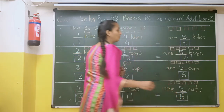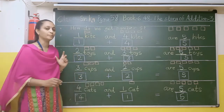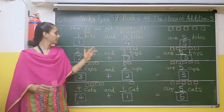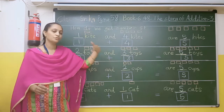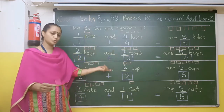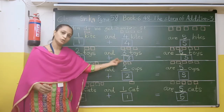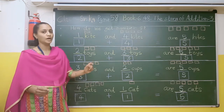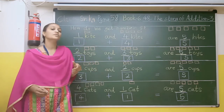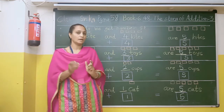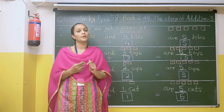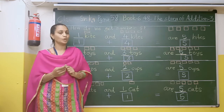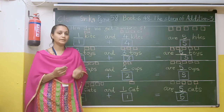So in this way we can get number 5: 1 plus 4 equals 5, 2 plus 3 equals 5, 3 plus 2 equals 5, and 4 plus 1 equals 5. These are the different ways in which we can get number 5. So this is how we get number 5.